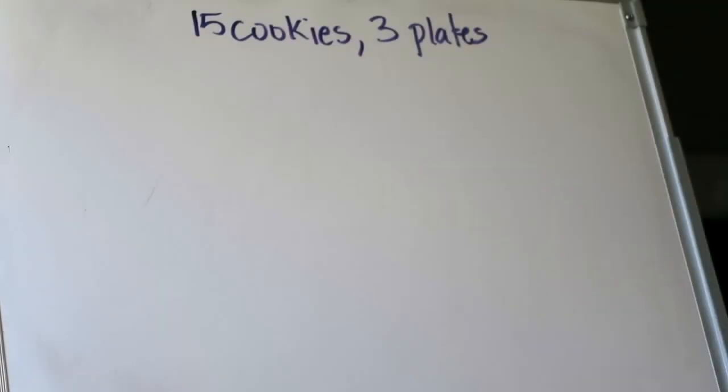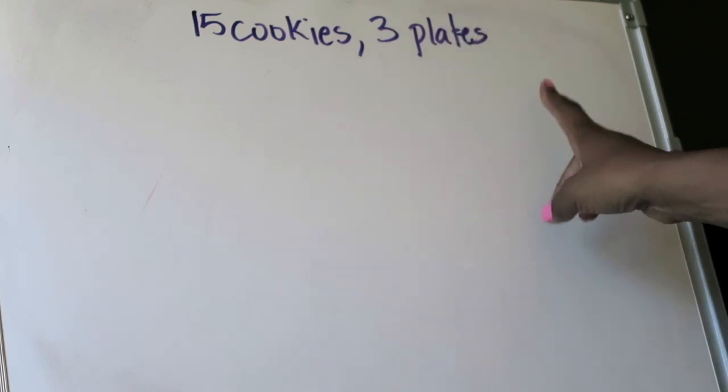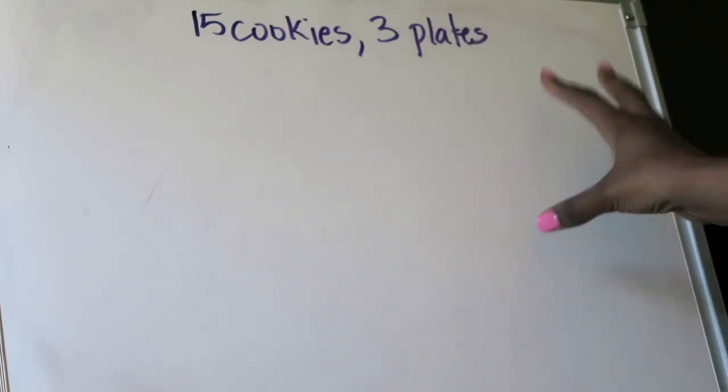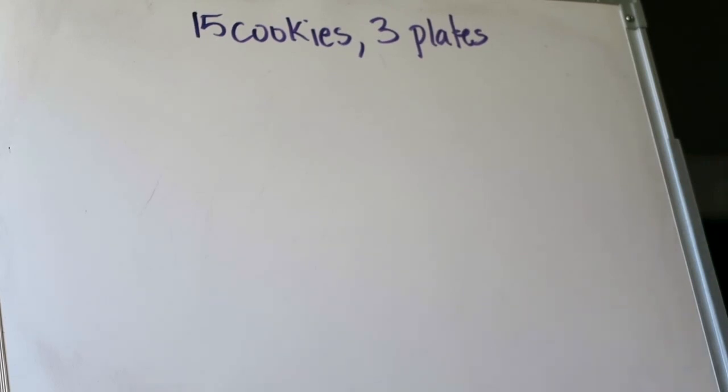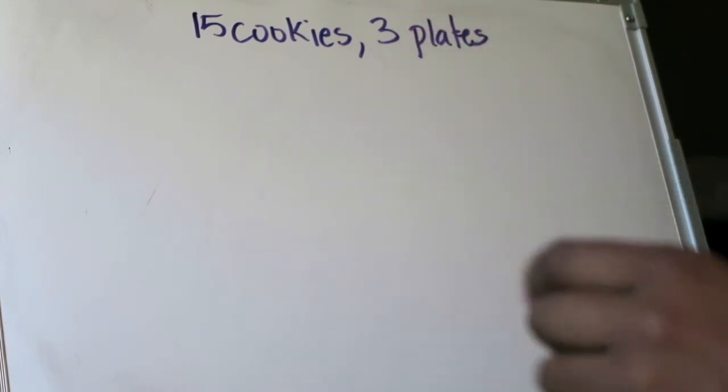In our second example we have 15 cookies and we want them to be put on three plates and I want to know well how many cookies do I need to put on a plate. Can you guys tell I'm hungry? We were talking about cupcakes now we're talking about cookies but what can we do? So the first thing you want to do is you want to first draw out again your 15 counters that will represent your 15 cookies.